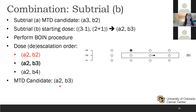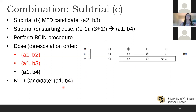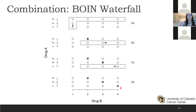Say we end up choosing A2, B3 as our MTD candidate for subtrial B. We then go to our third and last subtrial, starting at A minus 1 and B plus 1 from the last candidate — giving A1, B4. We again perform the BOIN procedure. Since A1, B4 is the highest dose for this subtrial, we can only de-escalate to A1, B3 and A1, B2. In this case, A1, B4 is determined to be the MTD candidate. Putting it all together, our three candidate MTDs are A3/B2, A2/B3, and A1/B4.